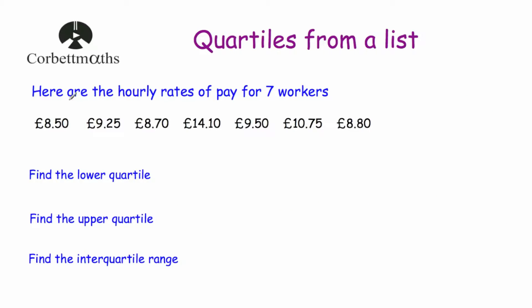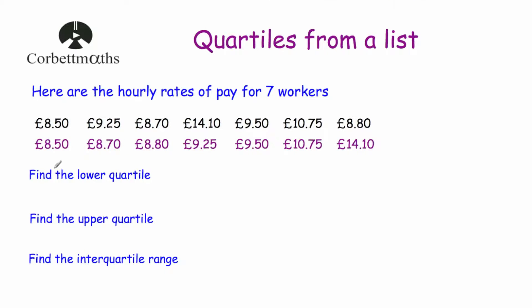Let's look at a question. Here we have the hourly rates of pay of seven workers: £8.50, £9.25, £8.70, £14.10, £9.50, £10.75 and £8.80. The first thing to notice is that our numbers aren't in order, so let's arrange them: £8.50, £8.70, £8.80, £9.25, £9.50, £10.75 and £14.10. We're asked to find the lower quartile, upper quartile and interquartile range. With seven values, we add 1 to get 8 and divide by 4, which equals 2. So our second value is our lower quartile, which is £8.70.